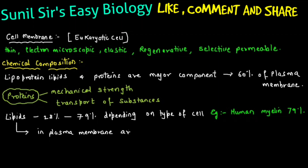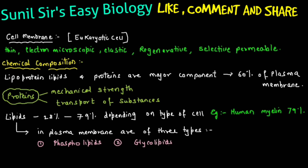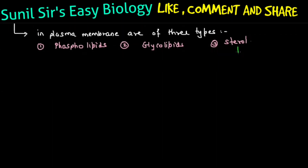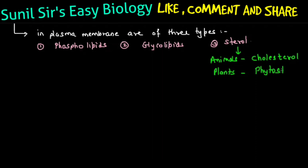There are three types of lipids in the plasma membrane. The very first type is phospholipids, which are very common in all cell membranes. Second is glycolipids. Third is sterol. In animal cells sterols are found in the form of cholesterol; in plant cells they are found as phytosterol; and in microorganisms the sterol is called ergosterol.